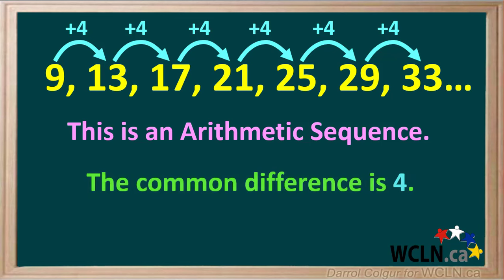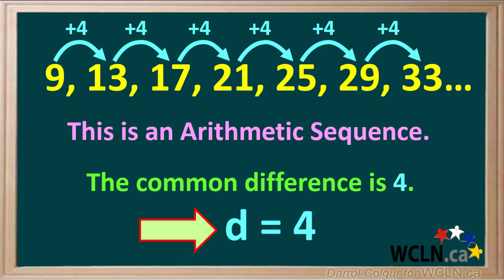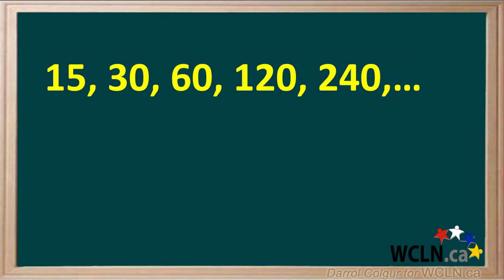And 4 is called the common difference. It is depicted by the letter d. So this is an arithmetic sequence for which the common difference d equals 4.